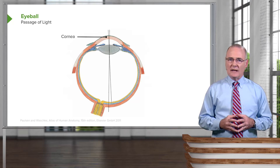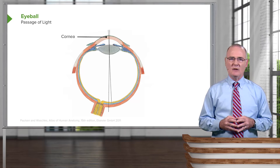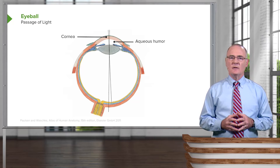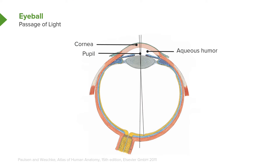The first structure that light will pass through is the cornea, which you see labeled here. Next, the light will pass through the aqueous humor and then through an aperture of the iris that we call the pupil, that opening labeled here. The lens is the next structure through which light will pass, and then its greatest journey is through the vitreous humor.